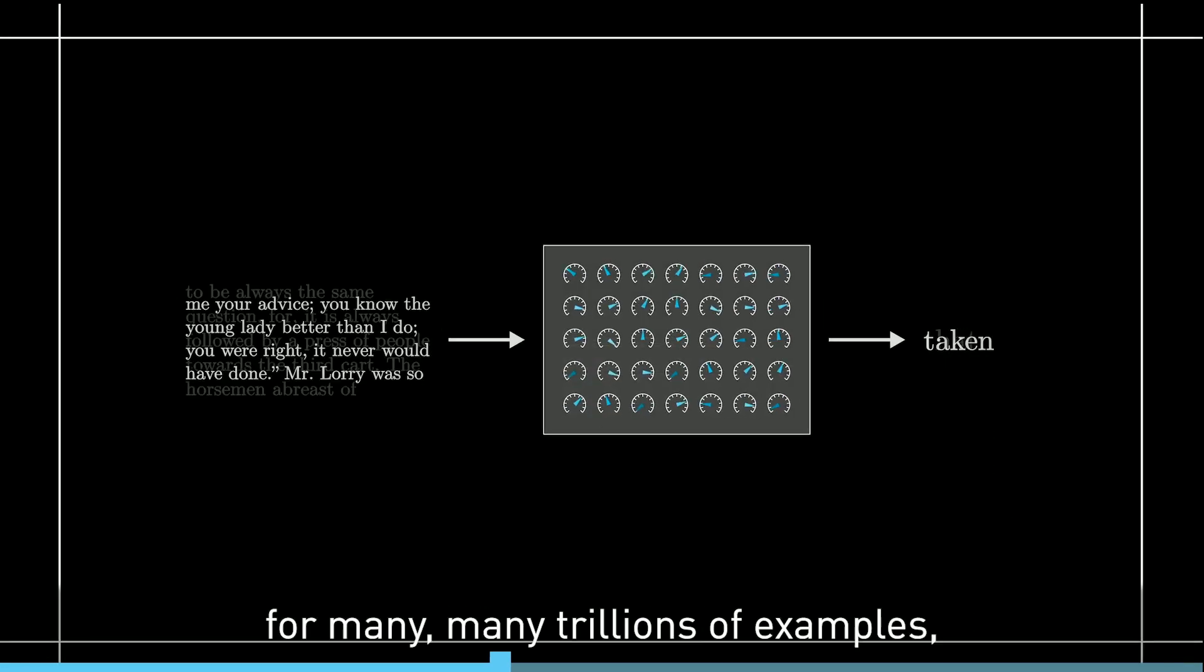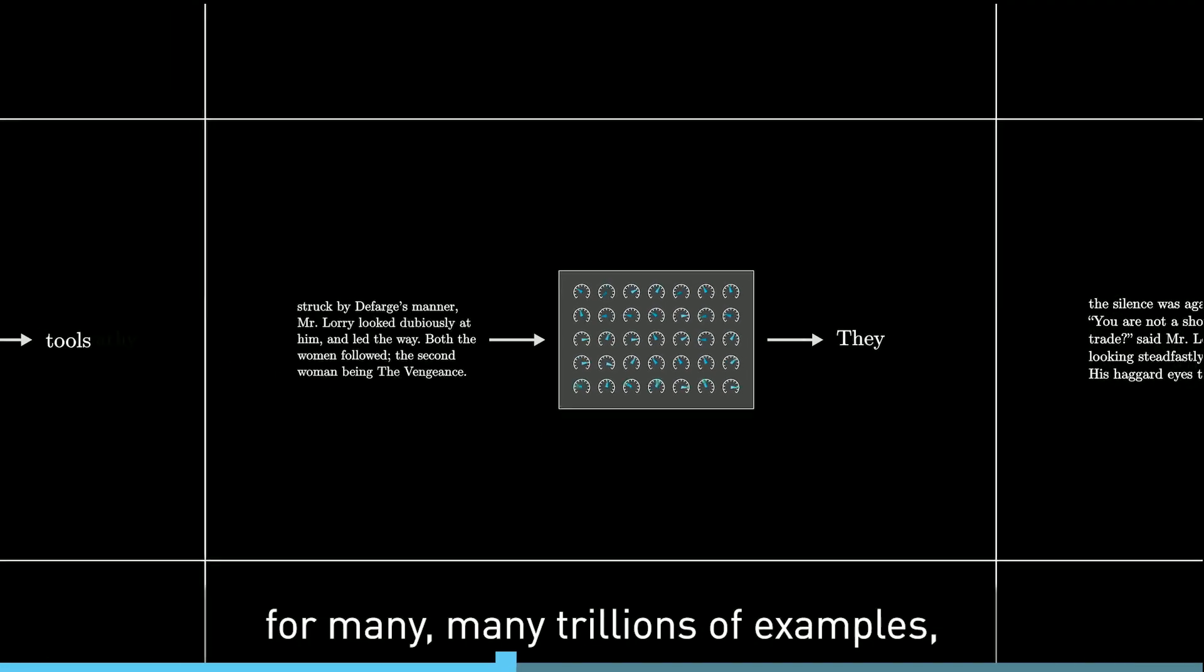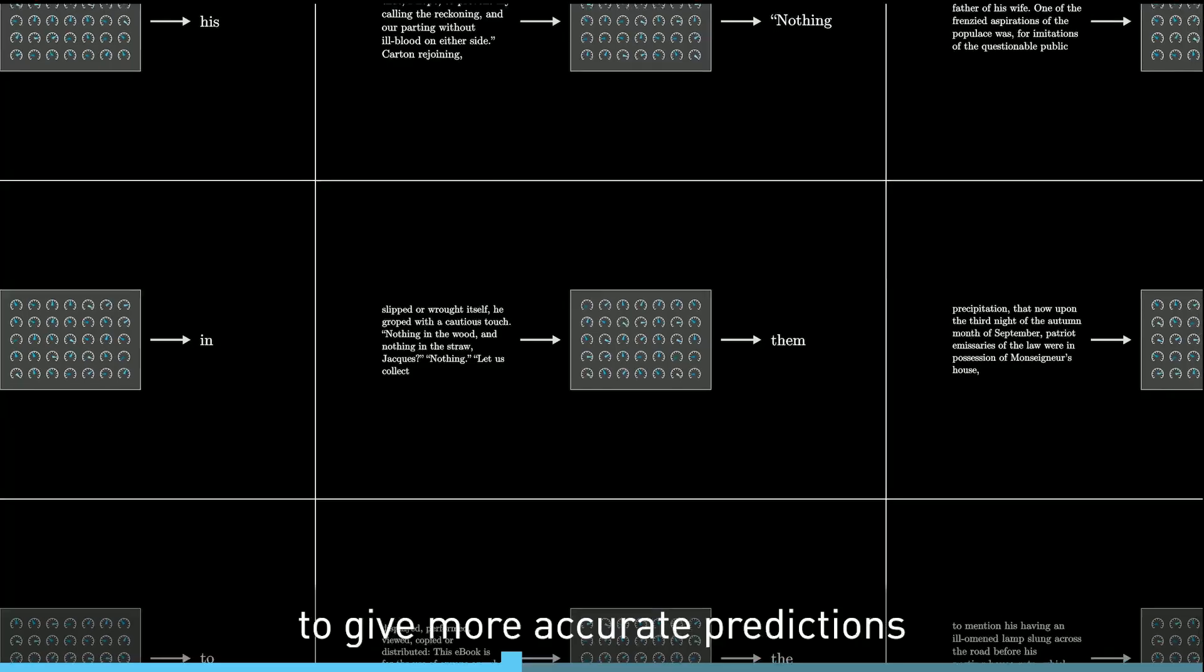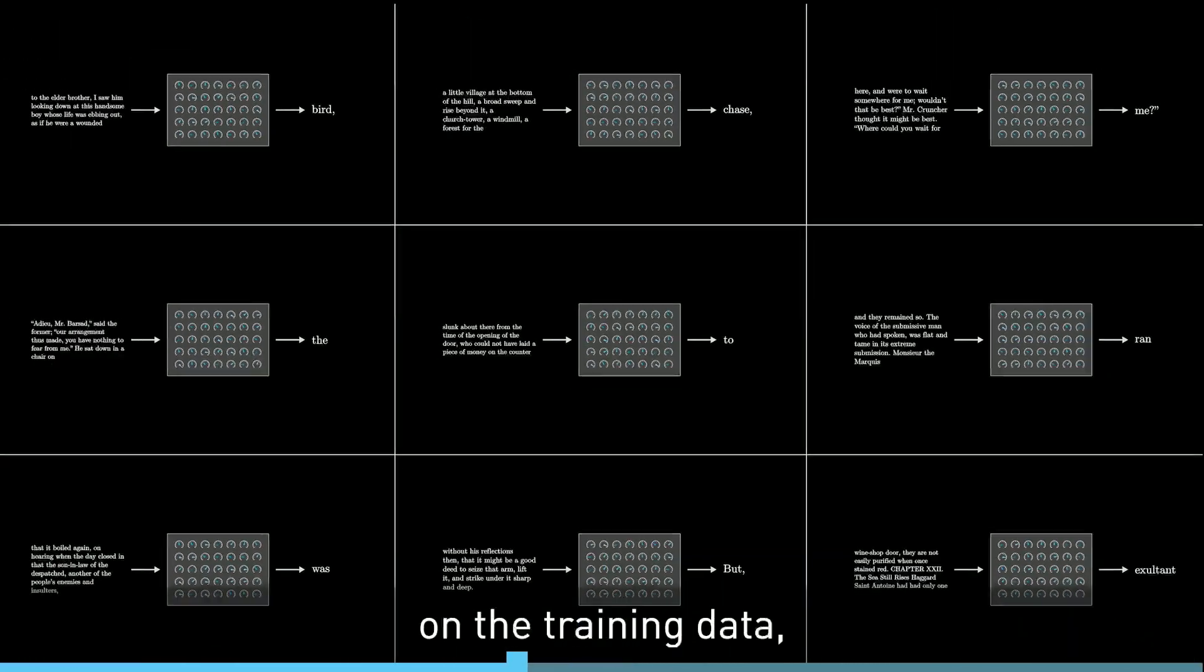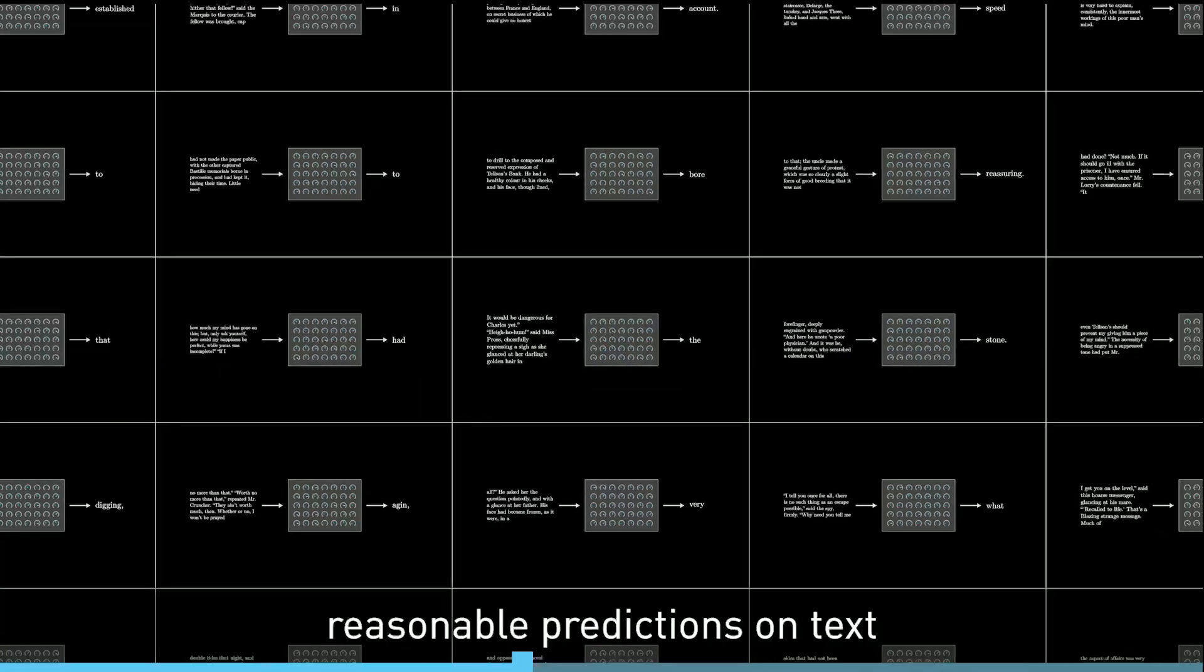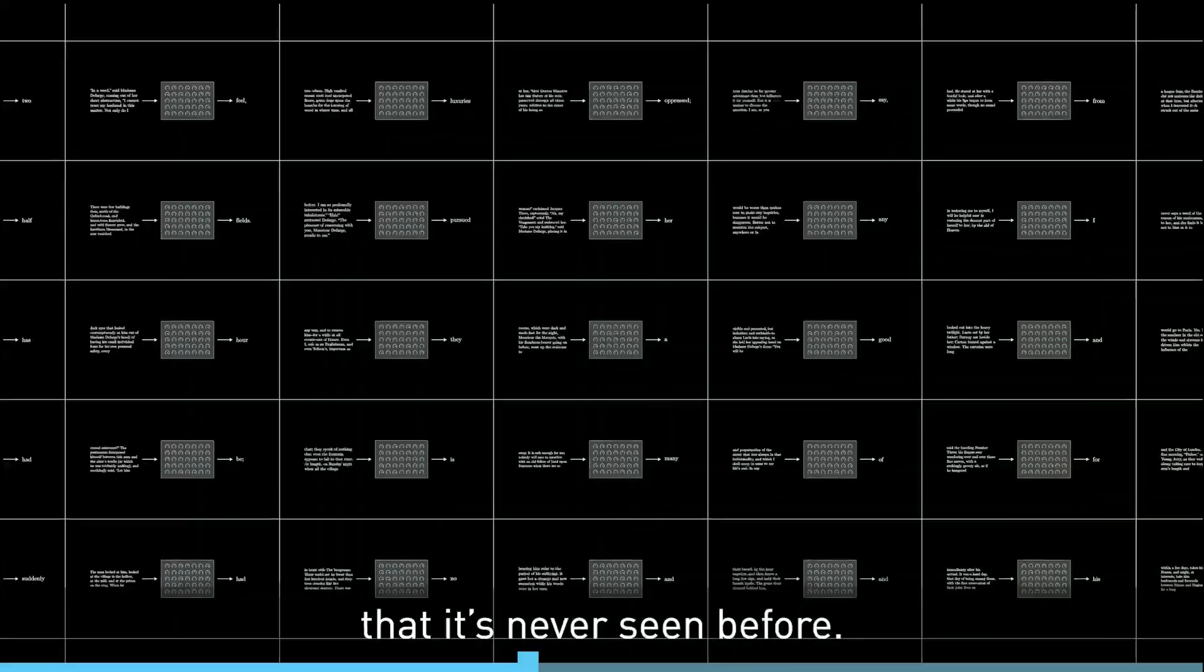When you do this for many, many trillions of examples, not only does the model start to give more accurate predictions on the training data, but it also starts to make more reasonable predictions on text that it's never seen before.